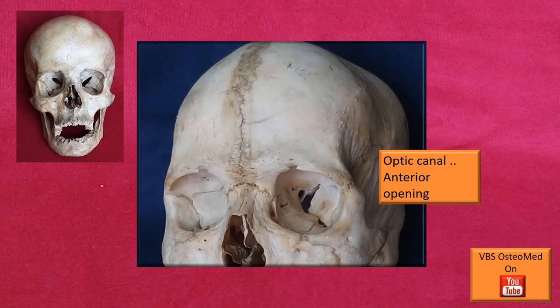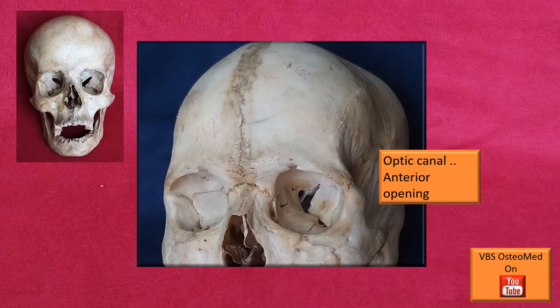Next, very close to the superior orbital fissure — more medially and above it — is the optic canal. The anterior or orbital opening of this canal is seen here. When traced using a probe it leads posteriorly into the middle cranial fossa. The optic nerve is lodged in it; it is an exclusive canal for the optic nerve.